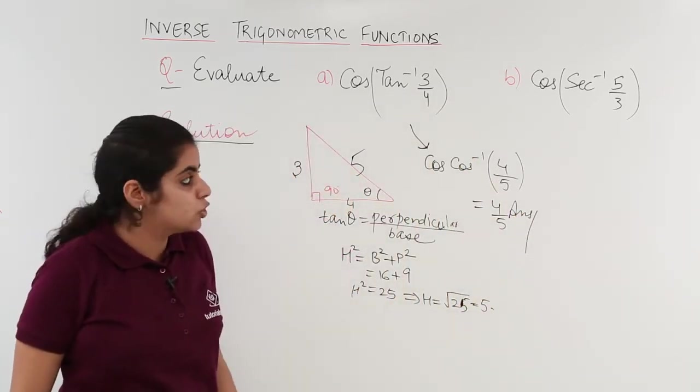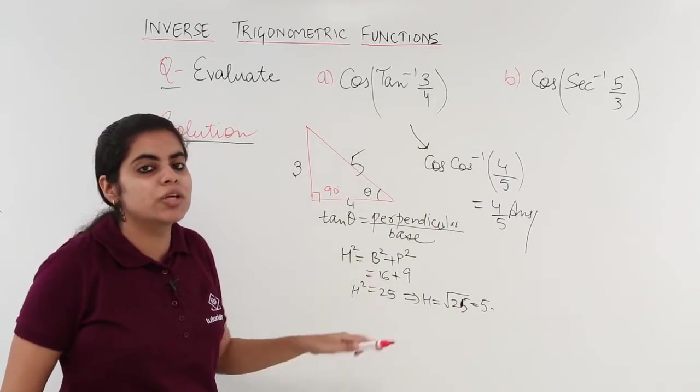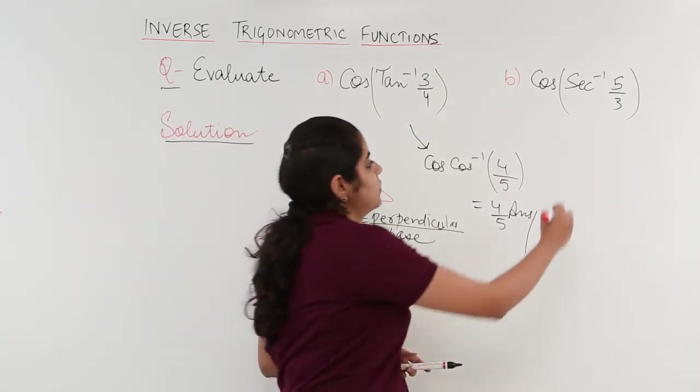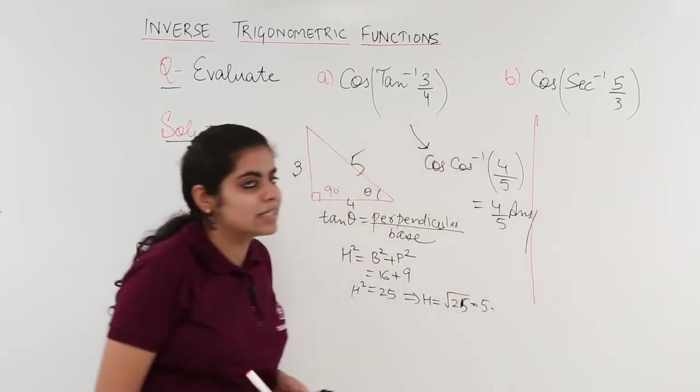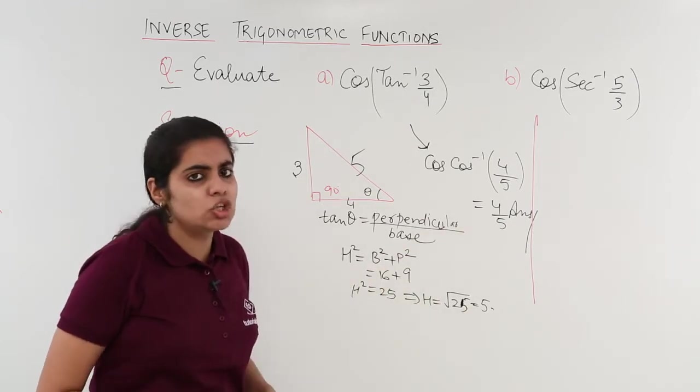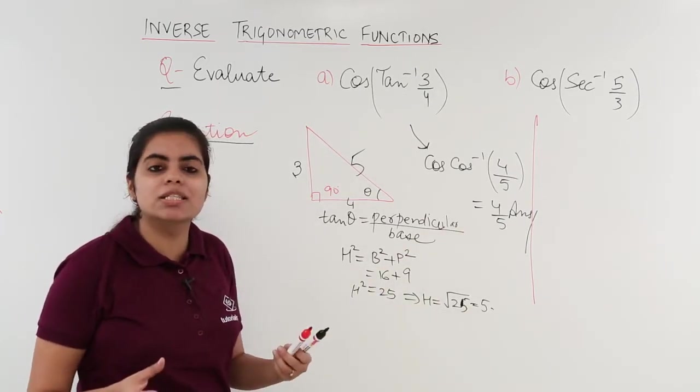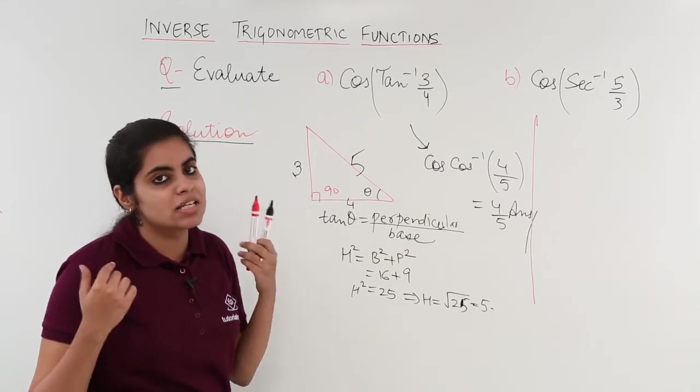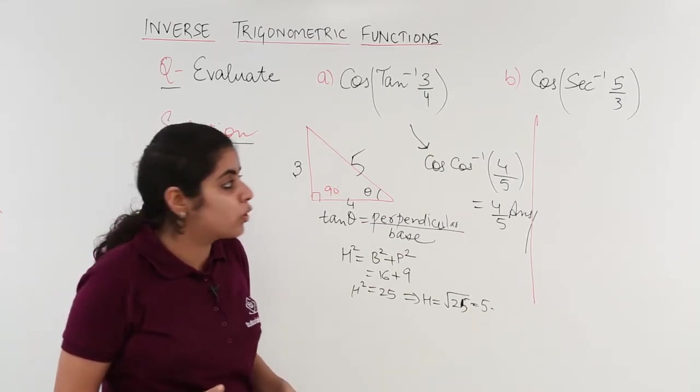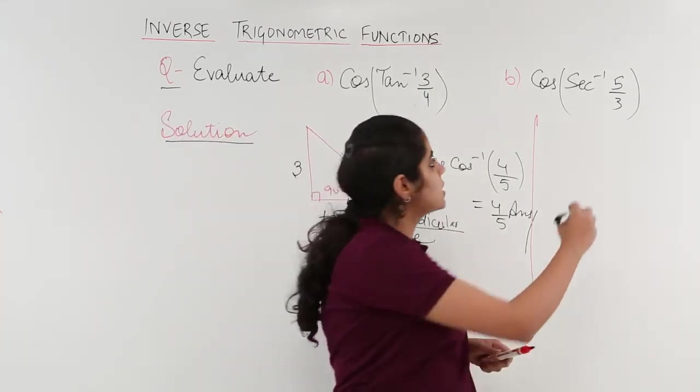This is the first solution but we aren't completed with the question yet because one more part is left. Let's get started. The question says cos and secant inverse. Cos and secant inverse have the same relation as sin and cosecant, that means reciprocal.